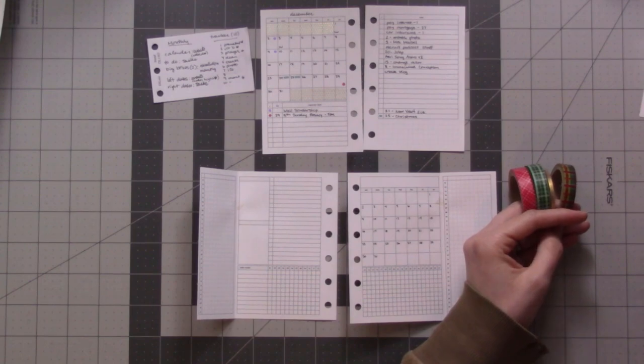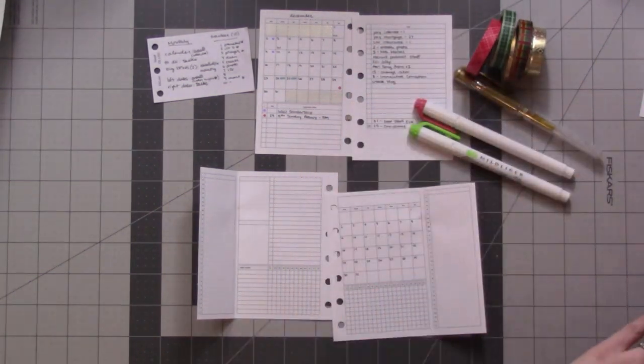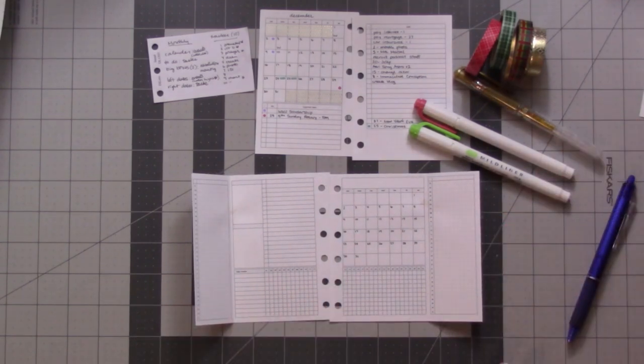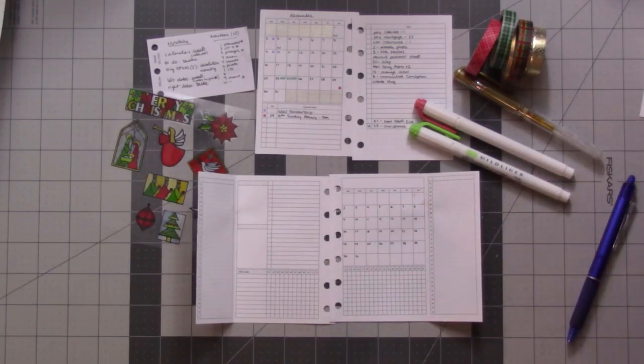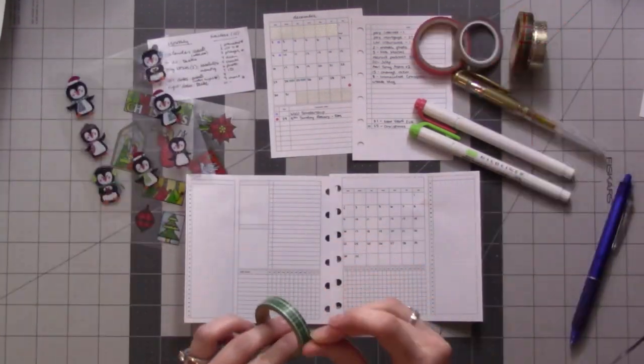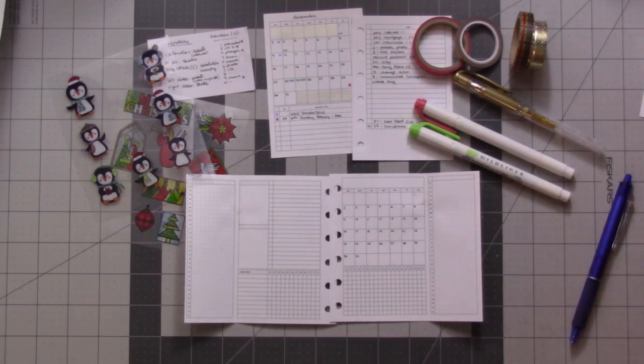If you do Sunday start, which I do. I do Sunday start for grid calendars even though I do Monday start for my weeks. I plan from a Monday to Sunday week but I like just to have the grid with the weekends on the ends. So I'm just doing a little bit of decorating here. Let's use some green.